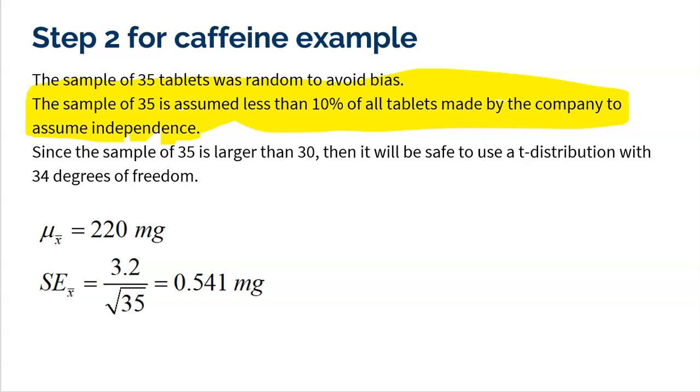Alright, the third one is that the sample needs to be big enough. According to the central limit theorem, since our sample is 35, it's larger than 30. So we're okay to be using a t-distribution here.